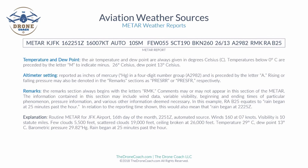Next we have temperature and dew point. The air temperature and dew point are always given in Celsius degrees. Temperatures below zero Celsius are preceded by the letter M to indicate a minus. In this example we have 26 degrees Celsius with a dew point of 13 degrees Celsius.